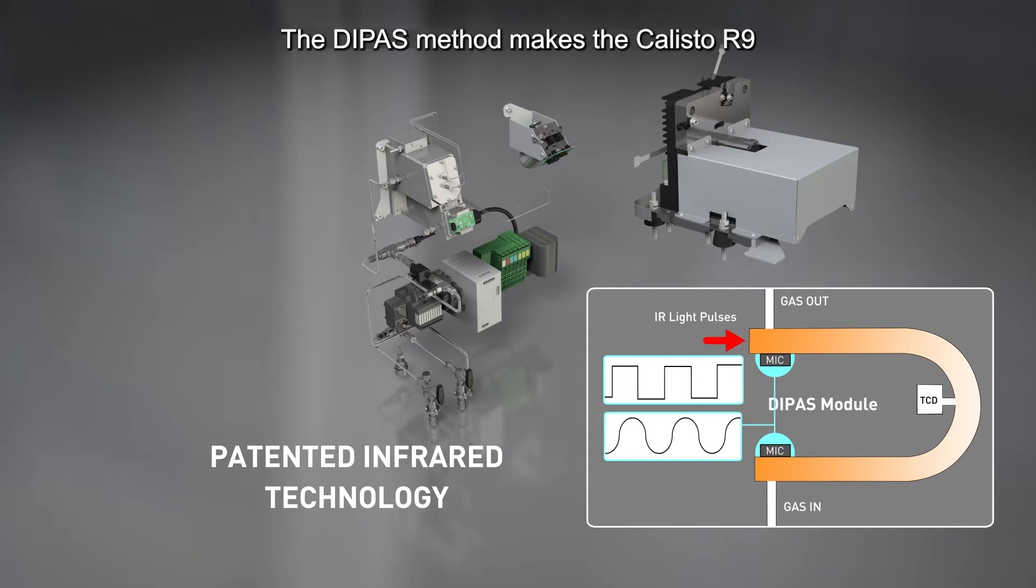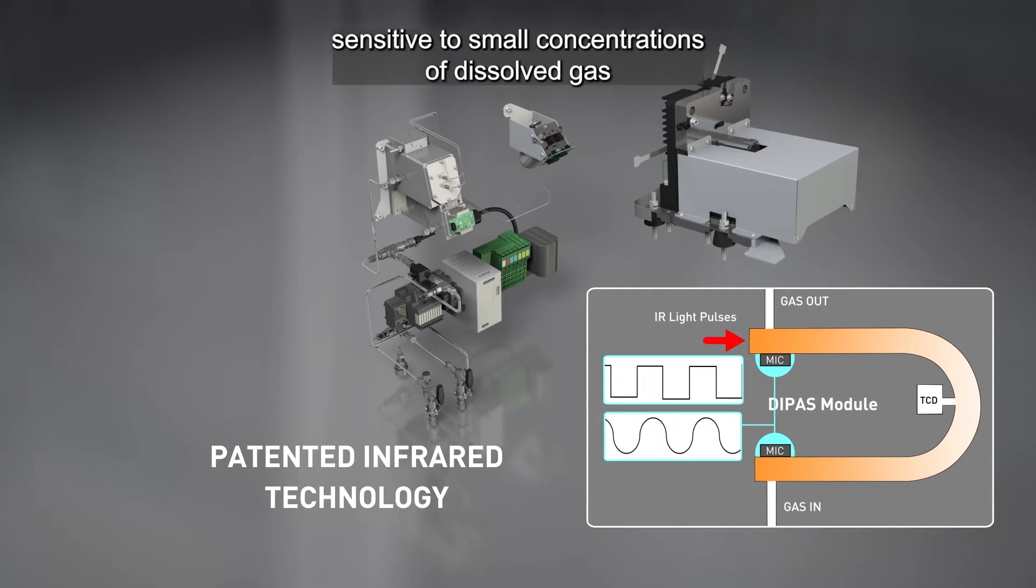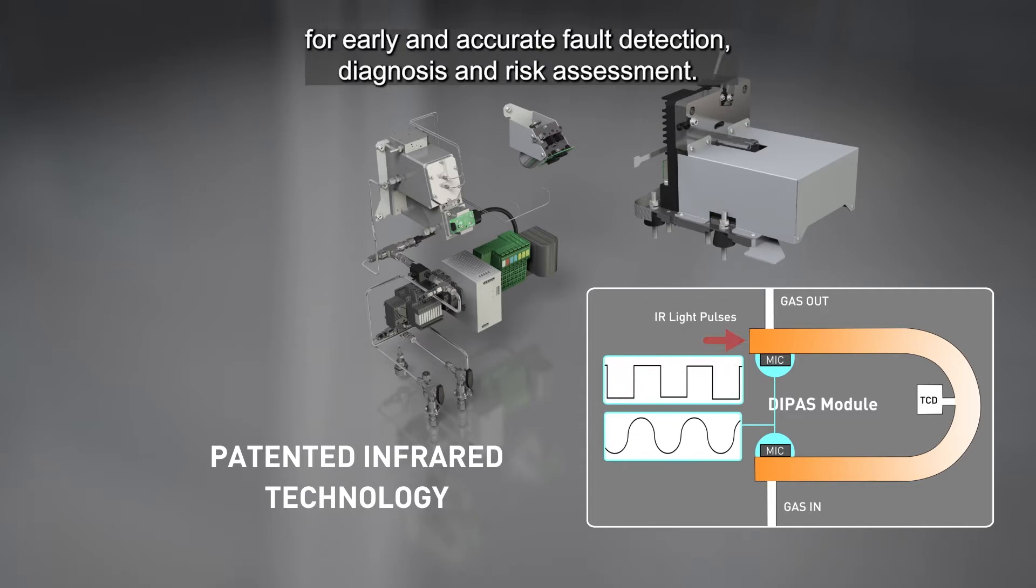The DPAS method makes the Callisto R9 sensitive to small concentrations of dissolved gas for early and accurate fault detection, diagnosis, and risk assessment.